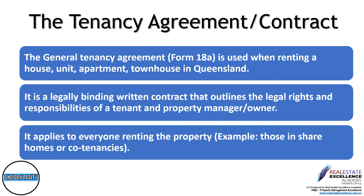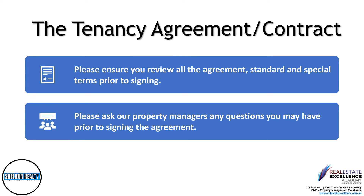The Form 18A is a legally binding contract between yourself and the property owner. Our agency manages the property on behalf of the lessor. The General Tenancy Agreement is used when renting a house, unit, apartment, or townhouse in Queensland. It's a legally binding written contract outlining the legal rights and responsibilities of the tenant, the property owner, and our agency. The Form 18A is made up of standard terms, which are the law and non-negotiable, and also special terms. Please ensure you review all of the agreement prior to signing and ask our property managers any questions before signing.